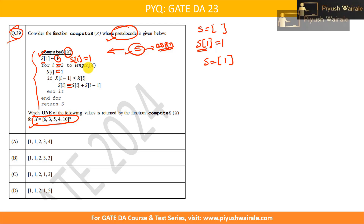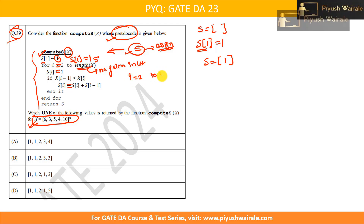For i equals 2 to length of x — what is length of x? The length function gives the number of elements in the list. x has 5 elements, so length is 5. For this particular for loop, we are iterating from i equals 2 to 5. The value of i for the first iteration is 2.